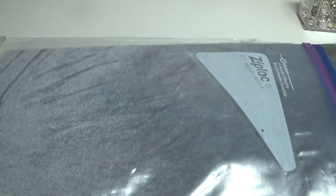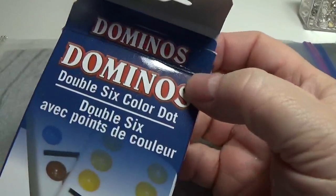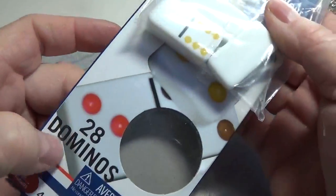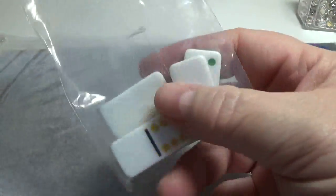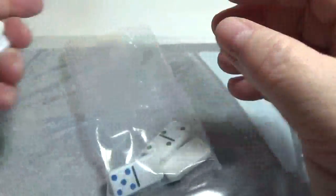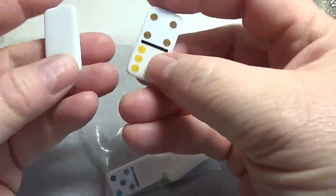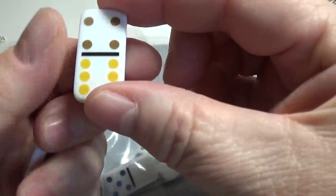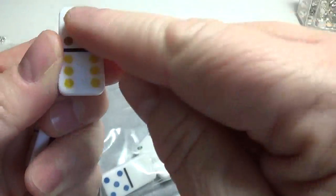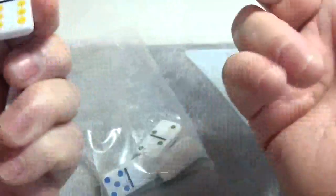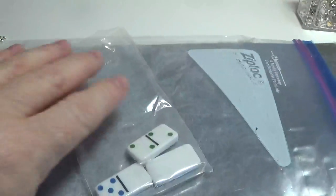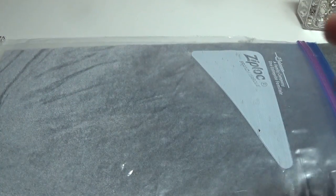I purchased some dominoes at Dollar Tree and there's 28 dominoes in the pack. And I like these dominoes because the side with the dots, they're not indented, they're just stamped on. So you can just color right over them. So I'll show you what I made.